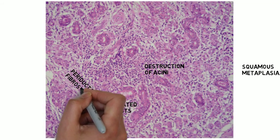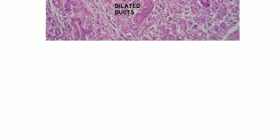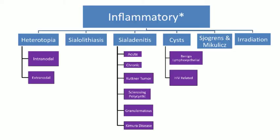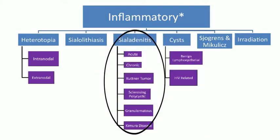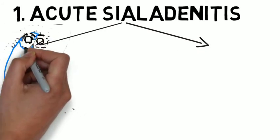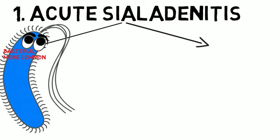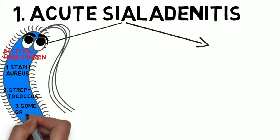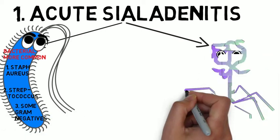Next we'll cover sialadenitis, subdivided into six topics. First, acute sialadenitis — divided into two categories based on etiology. Bacterial sialadenitis is more common and is usually Staphylococcus aureus; it can also be due to Streptococcus and some gram-negative rods. The other category is viral acute sialadenitis, due to mumps, EBV, coxsackie, influenza, parainfluenza, and several other viruses.